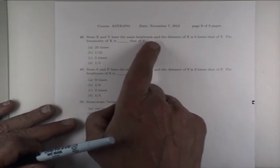Now we have two stars, X and Y, that have the same brightness. They appear to be equally bright, but the distance of X is five times that of Y. That is, X is five times more distant than Y. What is then the luminosity of X compared to that of Y?